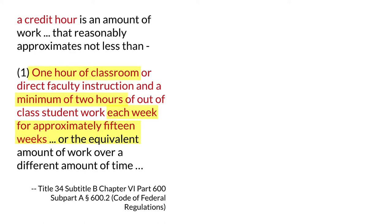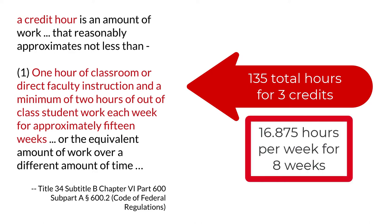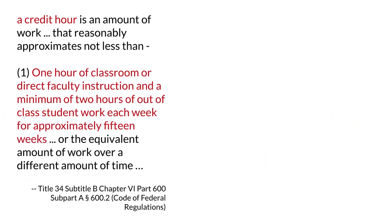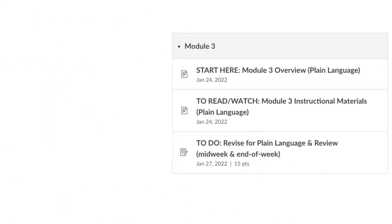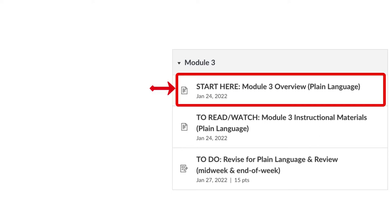All of that means a three credit hour course must include at least 135 hours of activity. If we divide those hours over eight weeks instead of 15, we get 16.875 hours every week for eight weeks. In TECM 5200, I've assumed your workload every week is a minimum of 10 hours. I've actually carefully considered how you should allocate those 10 hours to perform best in the course.